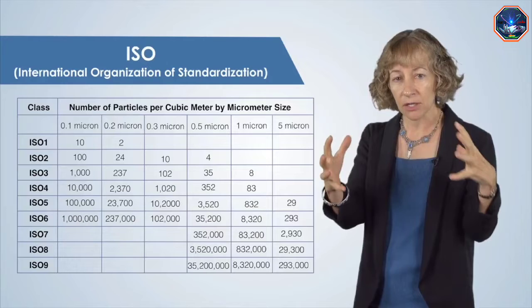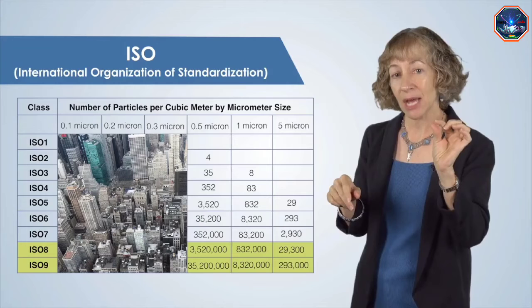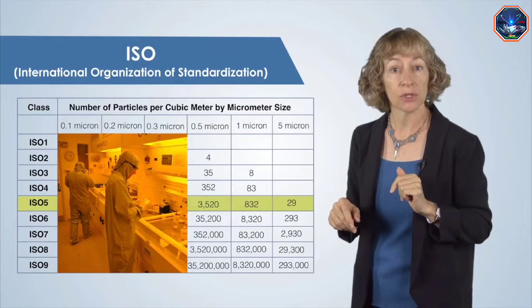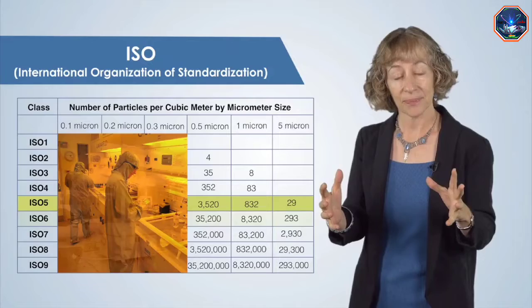As an example, the outdoor air in a typical city environment contains millions of particles per cubic meter that are a half a micron and larger in diameter. In contrast, a typical clean room rated ISO 5 can only have 3,520 particles per cubic meter that are over a half micron in diameter. The clean rooms you'll see in these videos are rated ISO 5 and 6.